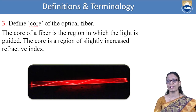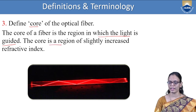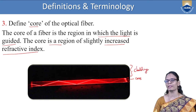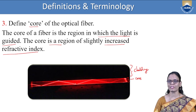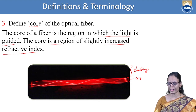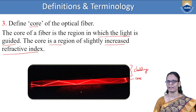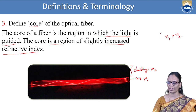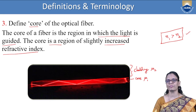Define core of optical fiber. The core is the region in which the light is guided — it is a region of slightly increased refractive index. Light travels only through the core and does not come into the cladding. The refractive index of the core, μ₁ (or N₁), is always greater than the refractive index of the cladding N₂ — the refractive index of the core should always be greater than the refractive index of the cladding.